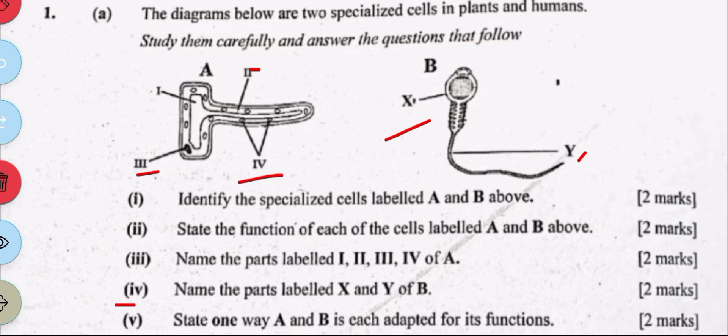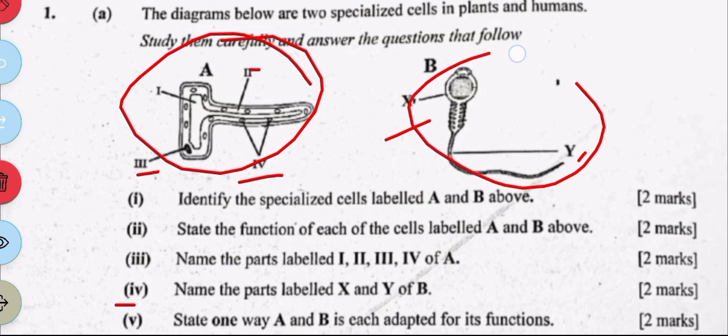So how is A adapted to its function? Now it is very thin which helps to allow water and nutrients to penetrate. And then B is also streamlined to be able to swim.